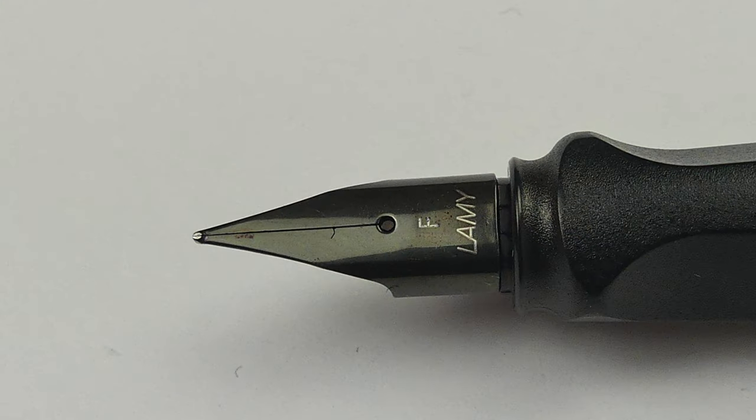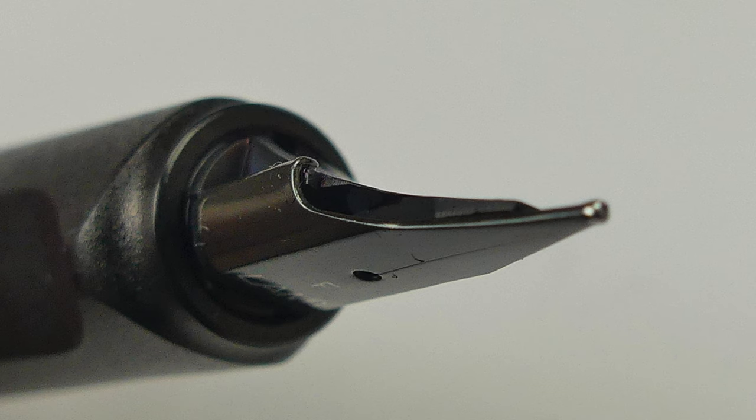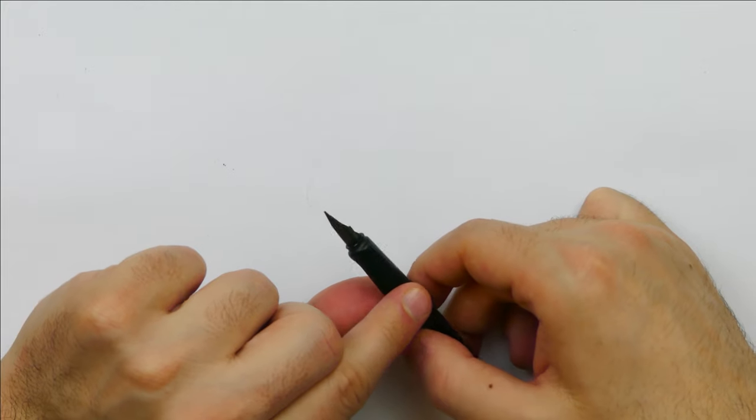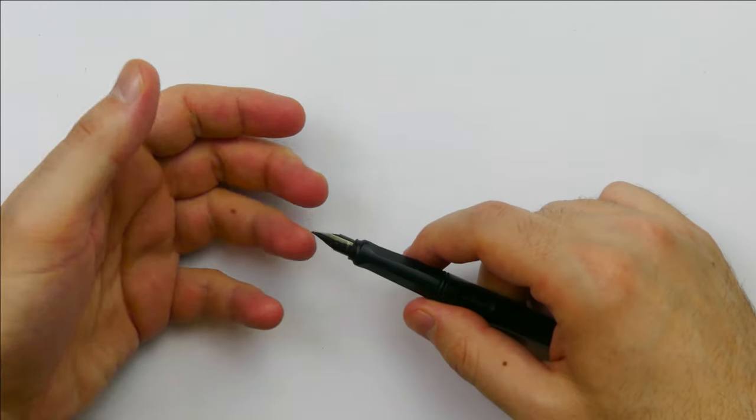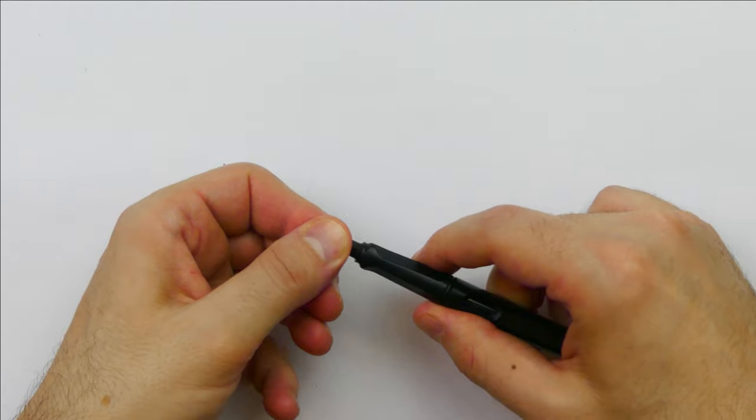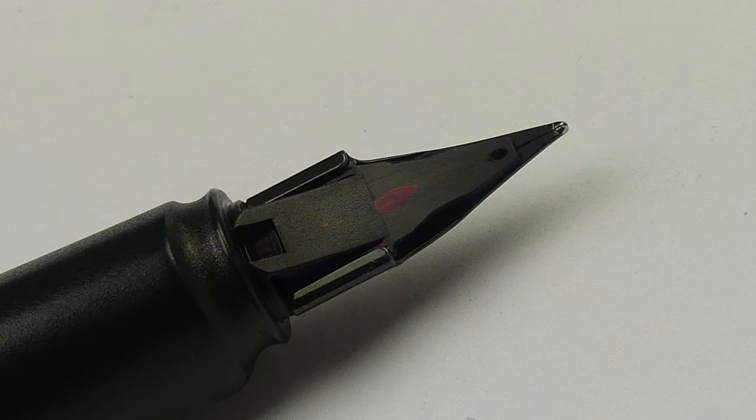The nib is a proprietary steel nib which has these wings that wrap around the feed, and this makes it easy to replace the nib with another one, just like that. And here's a look at the proprietary plastic feed.